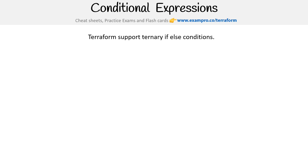We're taking a look here at conditional expressions. This is pretty much the only way that you can do if-else statements within Terraform, but it works out fine. It's actually using the ternary style of if-else. It's a single line — it starts with a condition, then a question mark for the if, the true value, then a colon representing the else, and then the false value. It's ternary.